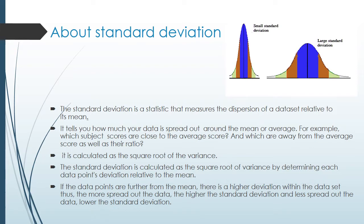For example, which subject scores are close to the average score and which are away from its average score, as well as it tells you their ratio percentage. Standard deviation is calculated as the square root of variance, by determining each data point's deviation relative to the mean. If data points are further from the mean, there is a higher deviation within the data set.